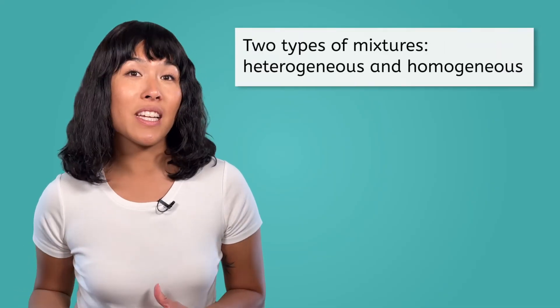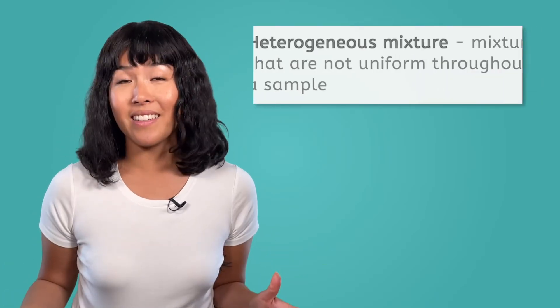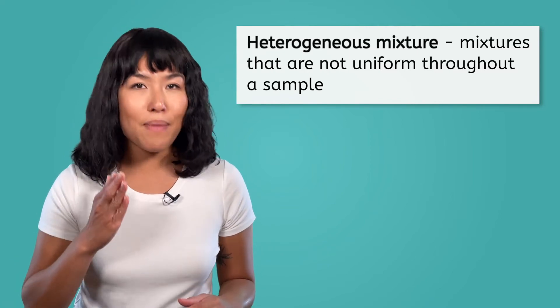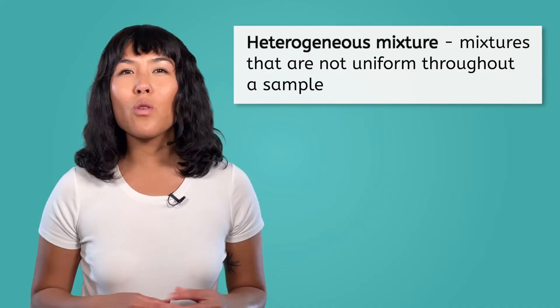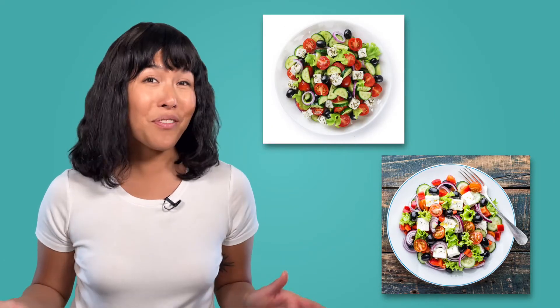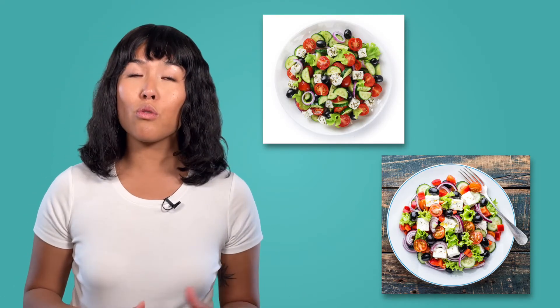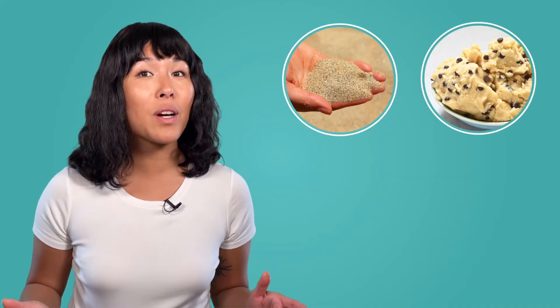Mixtures can be broken into two categories: heterogeneous mixtures and homogeneous mixtures. Heterogeneous mixtures are like my salad — they are not uniform throughout a sample, and each sample is different. If I were to divide my salad in half, the two halves would not be exactly the same. Also, if I were to order the same salad tomorrow, it would be different, even with the same ingredients — it may have more olives or cucumbers, or maybe it won't have tomatoes. Other examples of heterogeneous mixtures include sand, cookie dough, and liquids that settle upon standing, like orange juice with pulp.